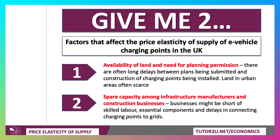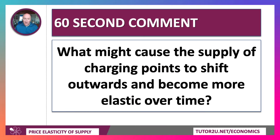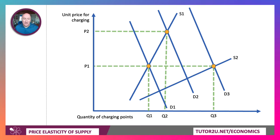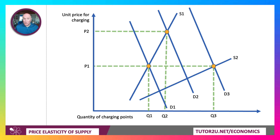Secondly, spare capacity amongst infrastructure manufacturers — businesses installing and building charging points may be short of skilled labour and key components, causing delays in connecting charging points to the grid. As demand for charging points rises, if supply is inelastic, the unit price tends to rise. But if we can shift the supply of charging points and make it more elastic — through government subsidies, economies of scale in manufacturing, process innovation such as wireless charging, or regulations requiring new residential homes with on-site parking to have their own charge point — then in theory we can shift that supply curve out and it becomes more elastic over time. As demand shifts out to D3, we can reach an equilibrium with a unit price for charging perhaps lower than at present. If we can scale up the availability of charging points, that should bring prices down and encourage more people to buy electric cars.